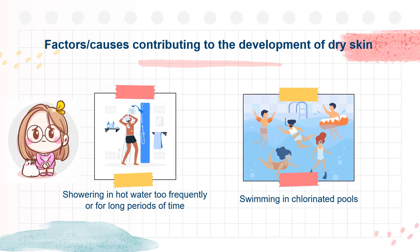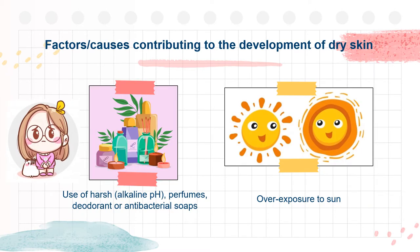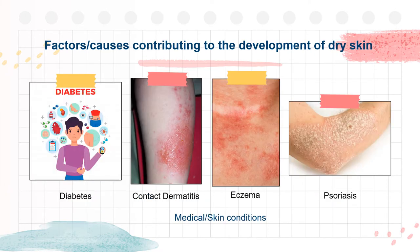What are the factors or causes contributing to the development of dry skin? Number one: showering in hot water too frequently or for a long period of time. Number two: swimming in chlorinated pools. Number three: use of harsh alkaline pH, perfumes, deodorant, or antibacterial soaps. Number four: overexposure to sun. Lastly, medical or skin conditions such as diabetes, contact dermatitis, eczema, and psoriasis.